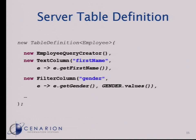The server-side table definition looks like this — enhanced with Java 8 lambdas for the example. We have a query creator that takes the search values and creates the query. Then we define the columns: we have the technical name and then specify that when we map back query results, we map one employee for the first name column to e.getFirstName(). For the gender, we have a filter column where we also have a mapping and additionally define the filter values to be presented to the client.